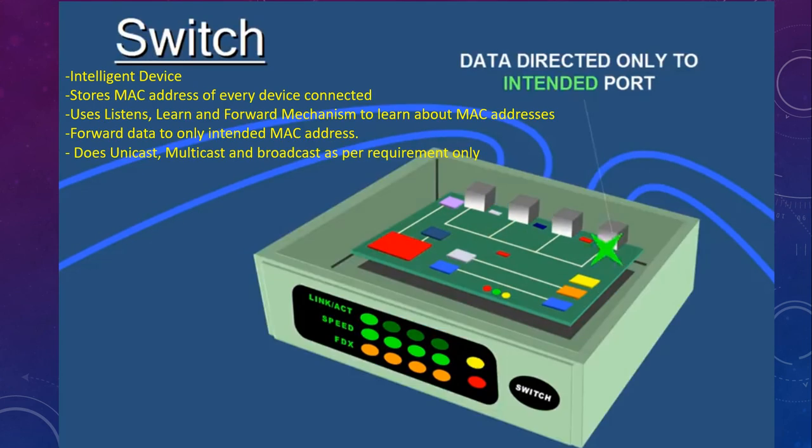Then we have a device called a switch. A switch is basically an intelligent device because it stores the MAC address of every device connected to it. It works on the mechanism of listening, learning, and forwarding. Whenever any device sends a message, it learns its MAC address, stores it, and then forwards the data to the intended recipient. If the MAC address is not in the switch database, it uses unicast, multicast, and broadcast as required to find it.